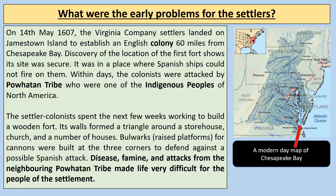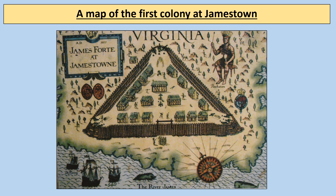On the 14th of May 1607, the Virginia Company settlers landed on Jamestown Island to establish an English colony 60 miles from Chesapeake Bay. The location of the first fort was secure — in a place where Spanish ships could not fire on them. Within days, the colonists were attacked by the Powhatan tribe, one of the indigenous peoples already living there. The settler colonists spent the next few weeks building a wooden fort; its walls formed a triangle around a storehouse, a church, and houses. Bulwarks — raised platforms for cannons — were built at the three corners to defend against Spanish attack. There's that famous map showing James Fort at Jamestown with its distinctive triangle shape.